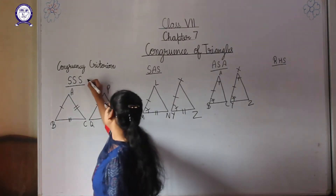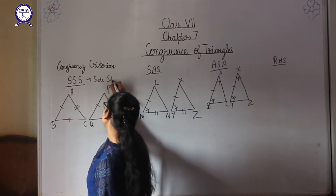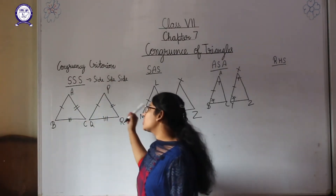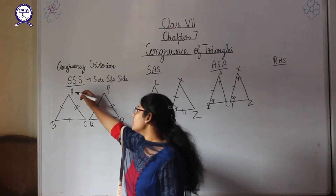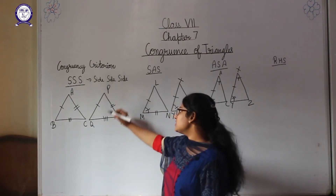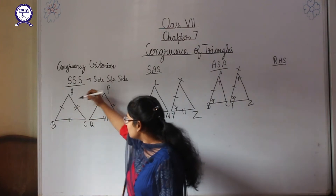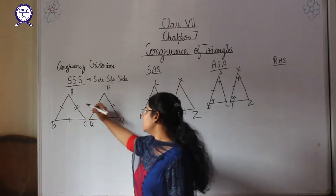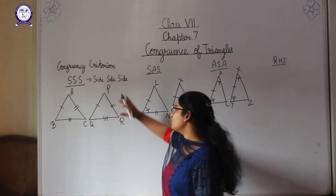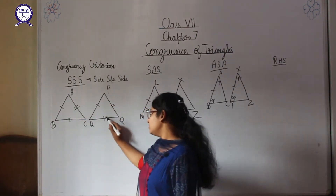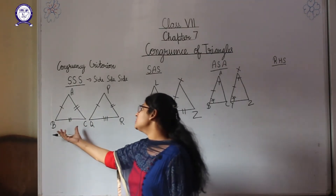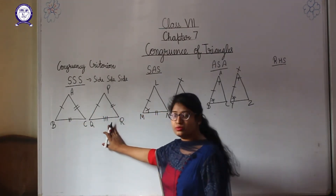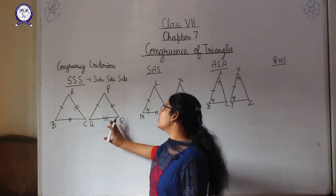SSS means side, side, and side. It means that all three corresponding sides of one triangle are equal to the corresponding sides of the other triangle. As you can see, triangle ABC and triangle PQR are given. The single line represents AB equals PQ, the double line represents AC equals PR, and the three lines represent BC equals QR.